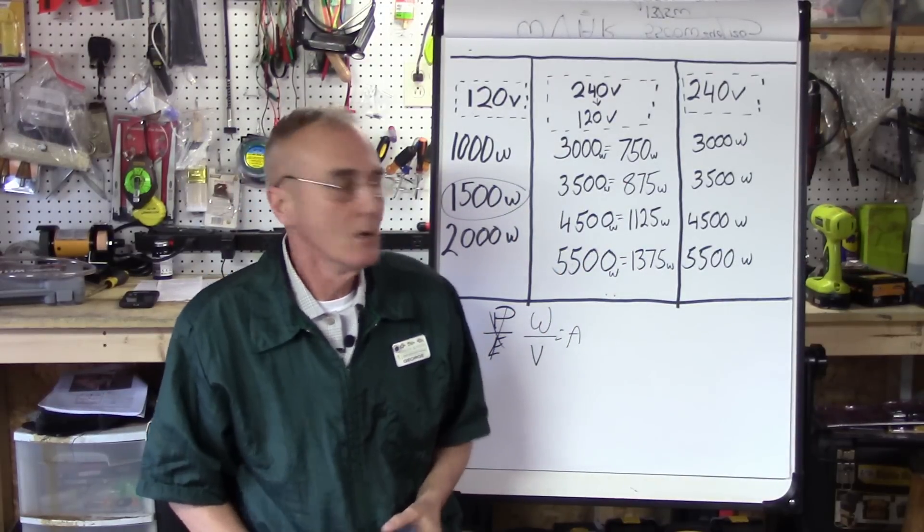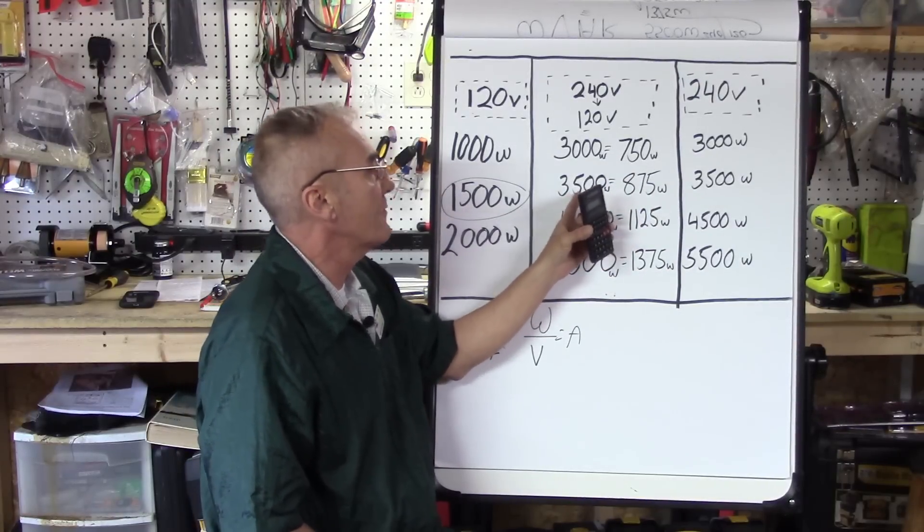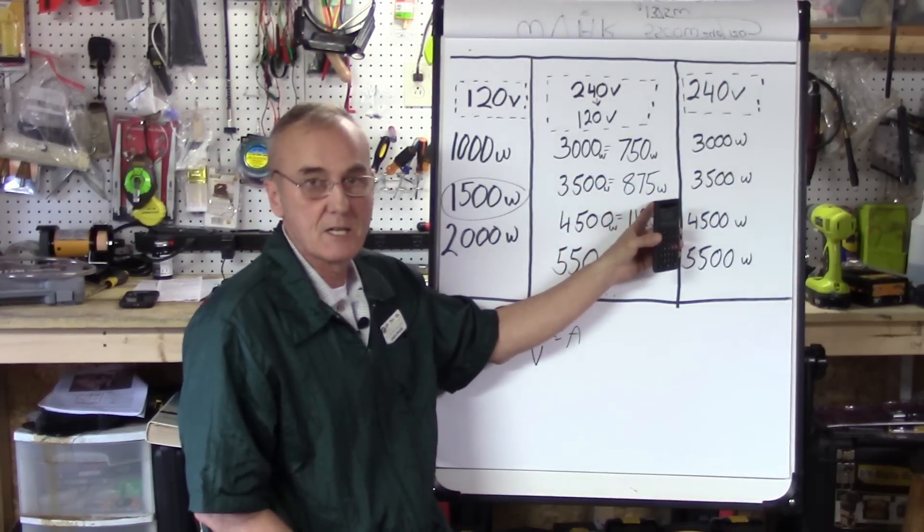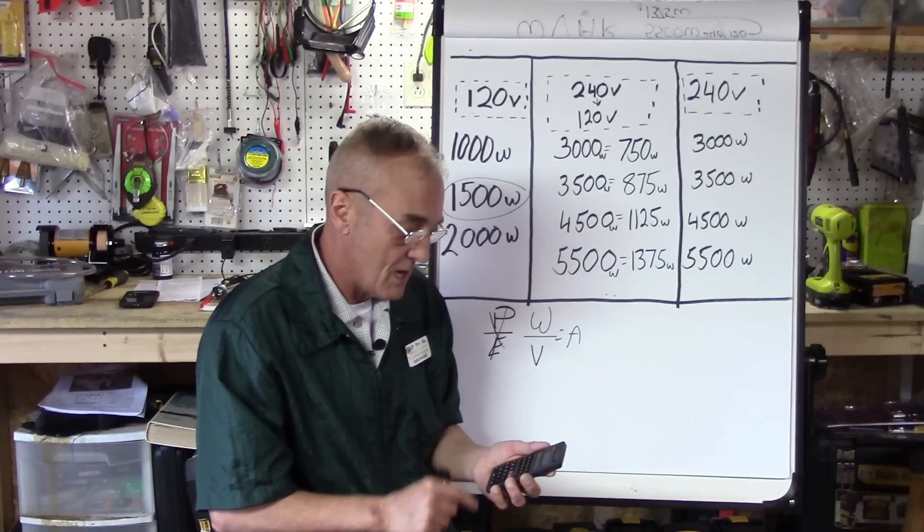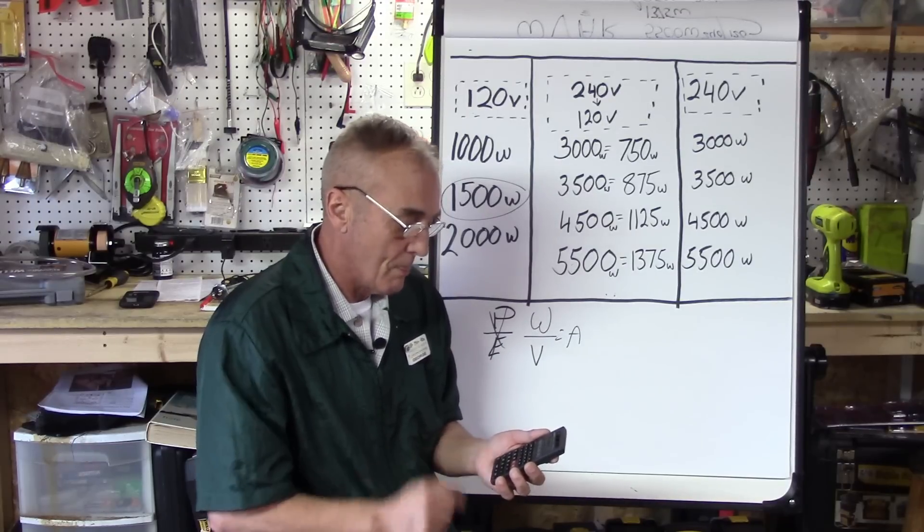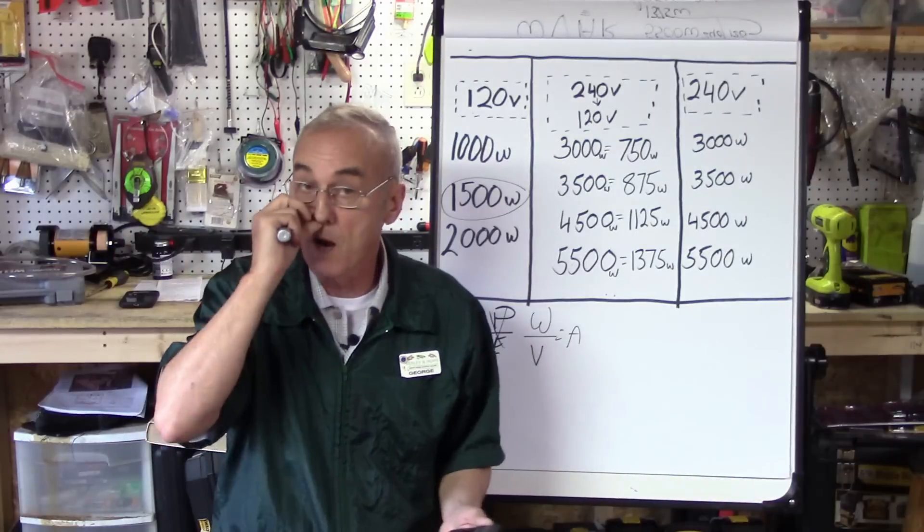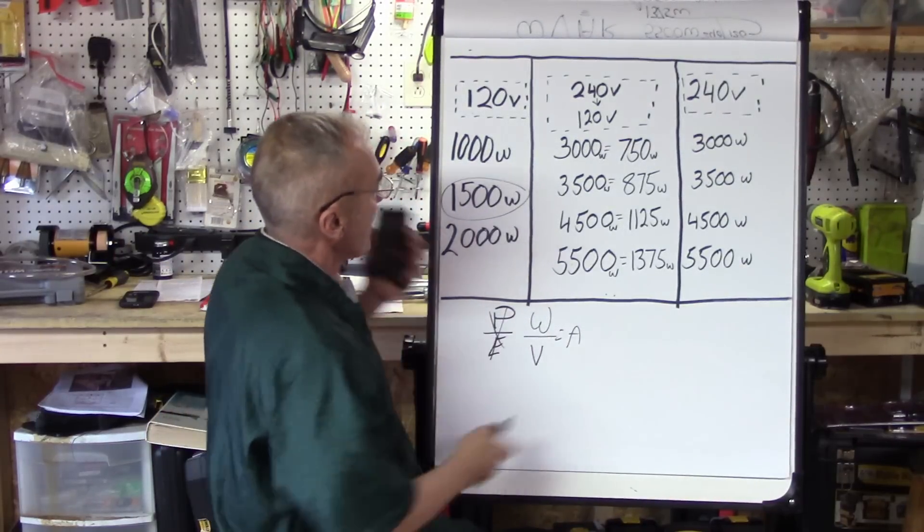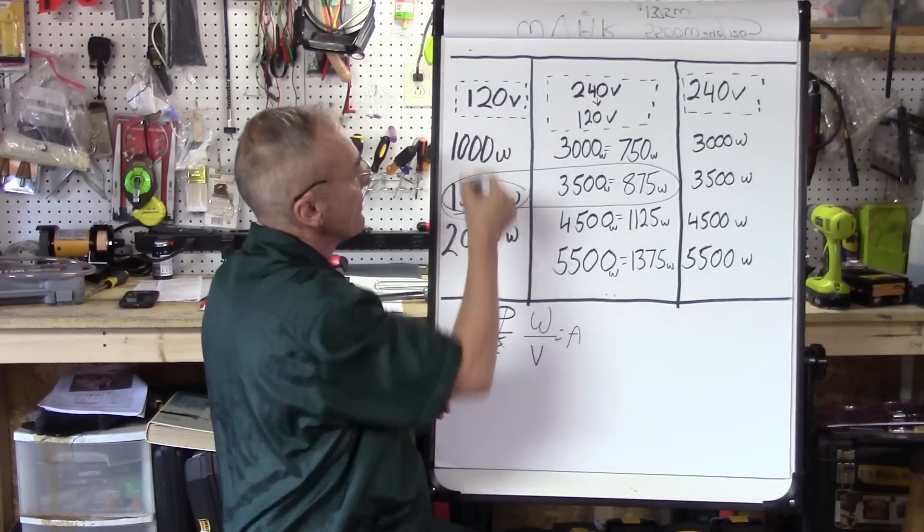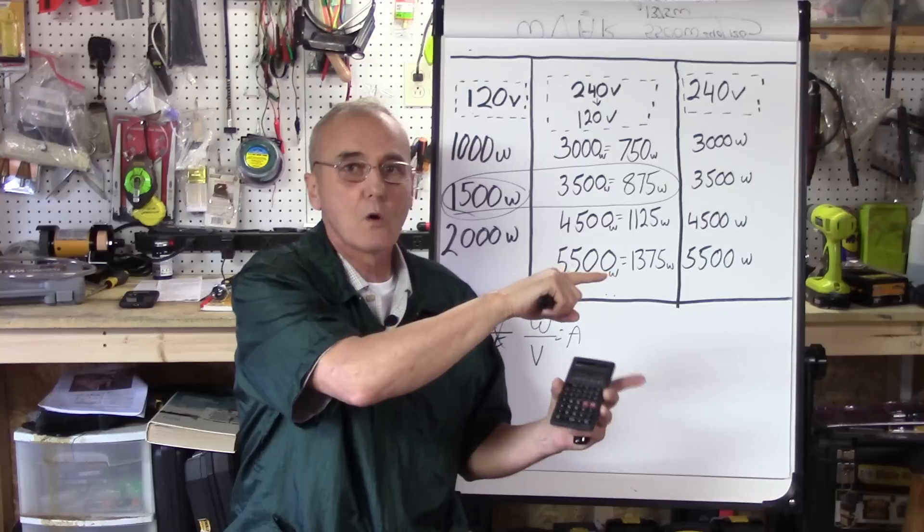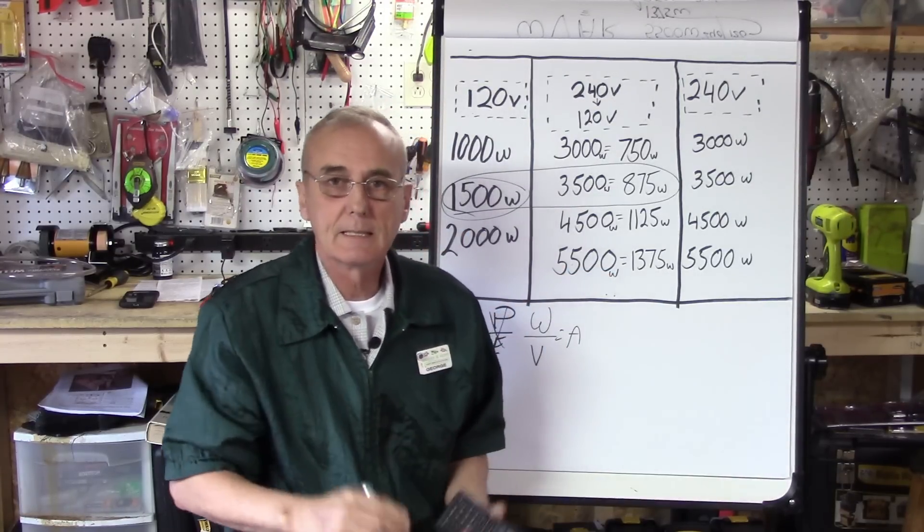Now we've got to figure out what combination I can use. You know what, I could try a 1500 and a 3500 wired at 120, which is now 875. Let me try that: 1500 plus 875 equals, divided by 120, that's 19.7 amps. I'm under my 20 amp threshold, but I'm really close. So with this combination of these two elements, if I've got a two element system on a 120 volt system, theoretically that's going to work, but I'm really close at 19.7 amps max draw.